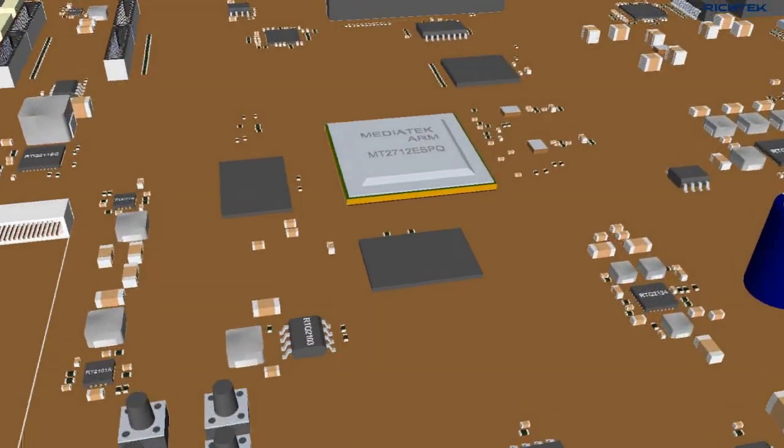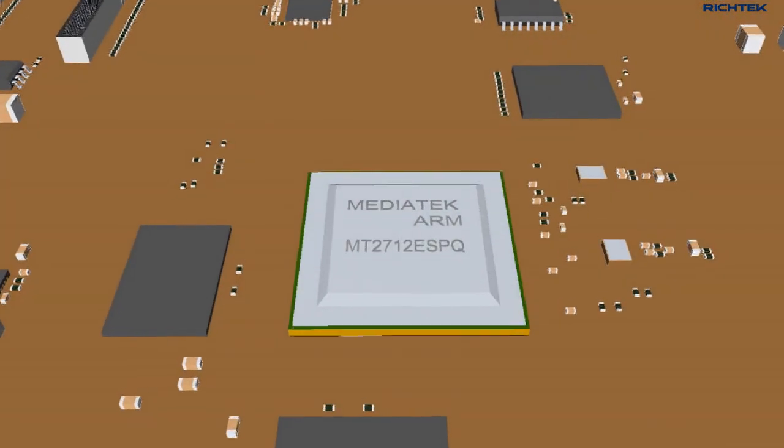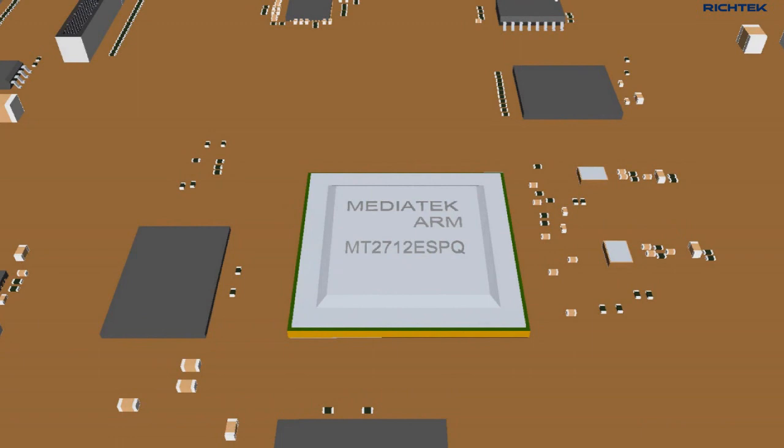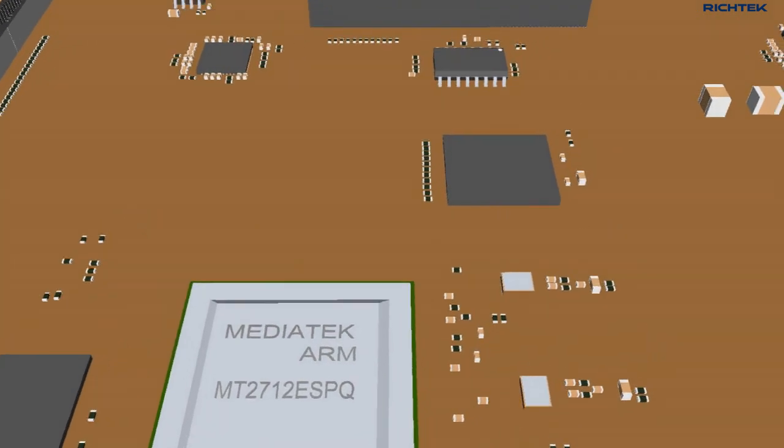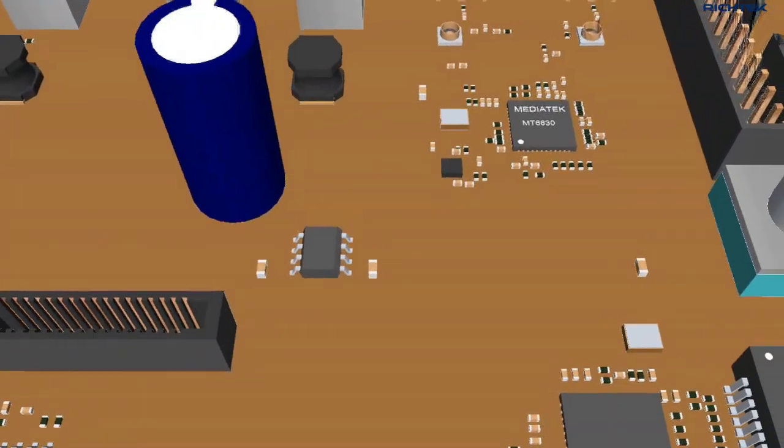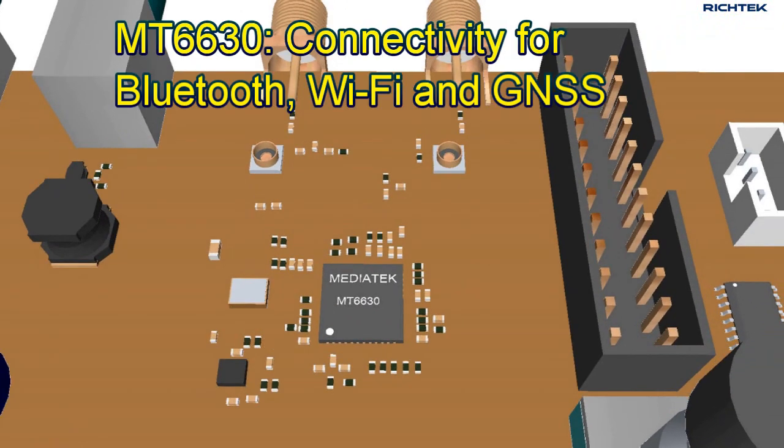The heart of this infotainment platform is the MediaTek MT2712, which is a powerful 6-core SoC with CPU and GPU cores. It works together with the MediaTek MT6630 connectivity chip, which supports Bluetooth, Wi-Fi and global navigation satellite system functionality.